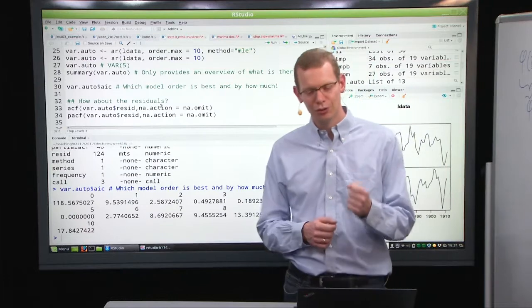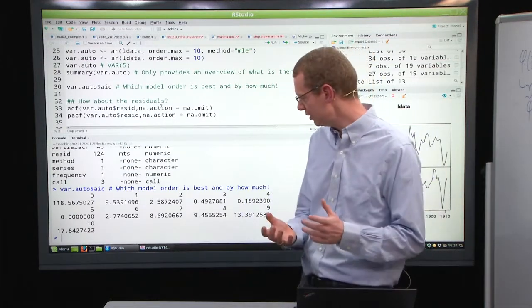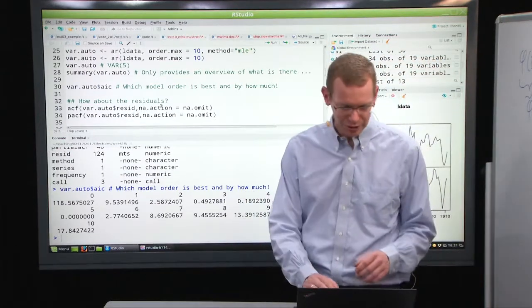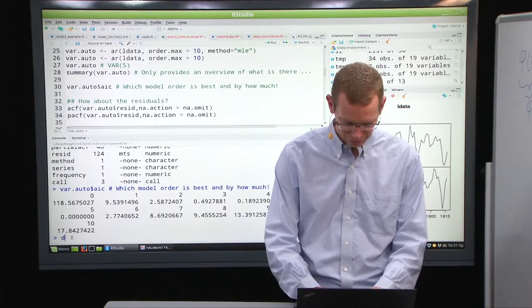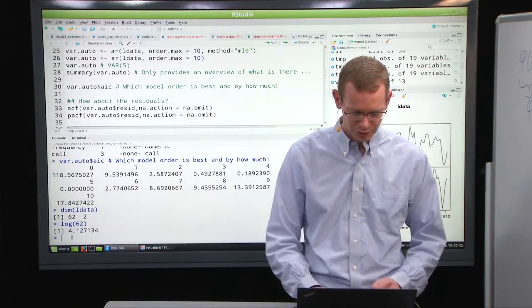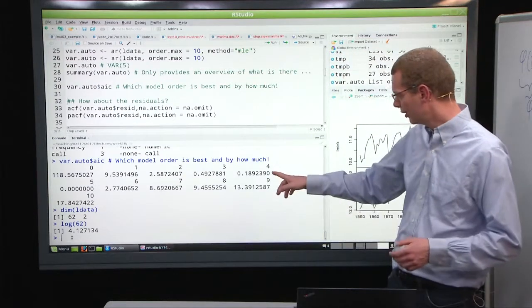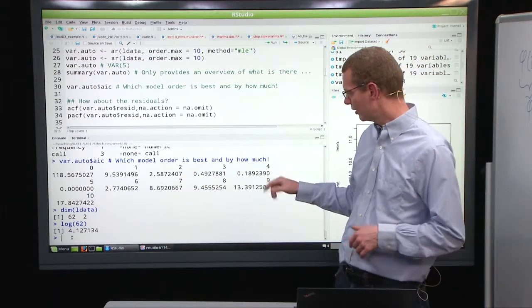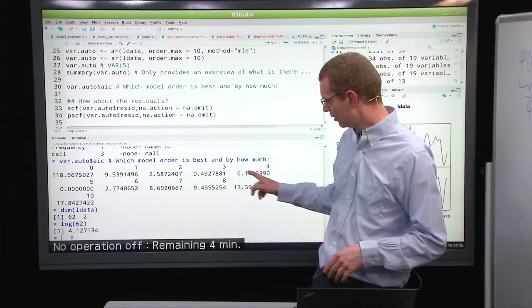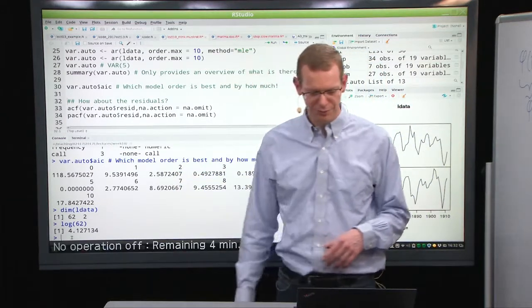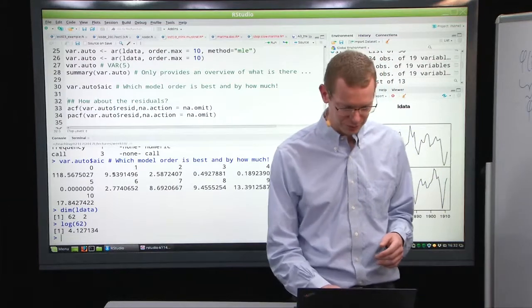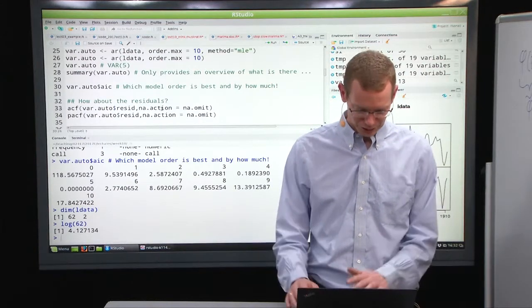Whereas, if you use BIC, then you should use the logarithm of the number of observations as a penalty. So, how many observations do we have here? What is the dimension of L data? We have 62. So, the log of 62, that's a penalty of 4 for each parameter. So, here we use a penalty of 2, but if we instead used just 4, roughly 4, then this would actually be better, much better, and again, much better. So, effectively, it means that a second-order model, or maybe even a first-order model, if you use BIC, would be more appropriate, but we cannot do that here. But, we're given a fifth-order model.